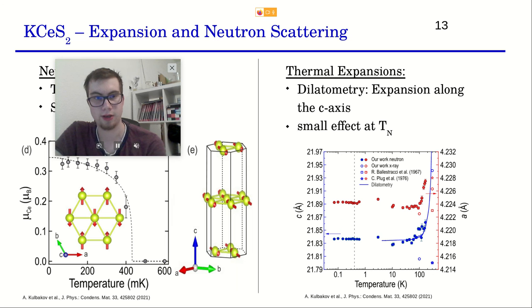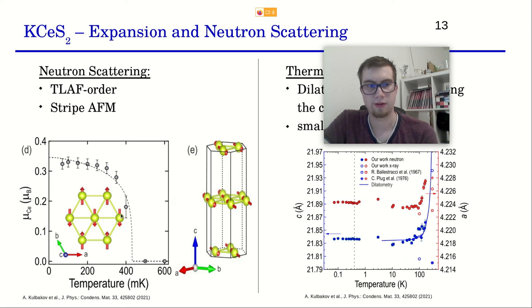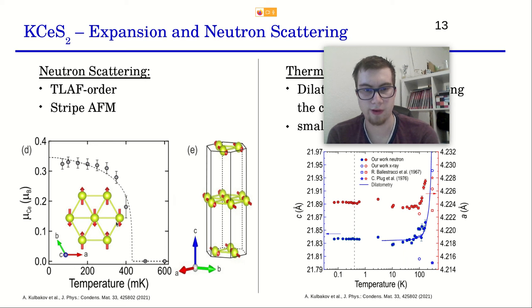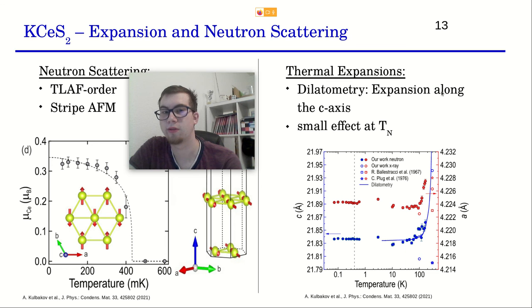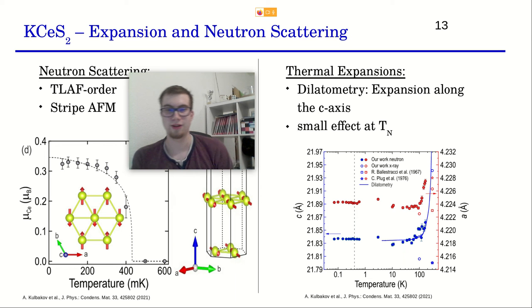Another paper on KCeS₂ focused on neutron scattering. They found magnetic moments and confirmed ordering around 400 mK, with an order parameter consistent with antiferromagnetism. They also identified it as a type of stripe antiferromagnetism in-plane. I also mention that thermal expansion was measured, which is a good complementary method, though I won't go into detail on that here.